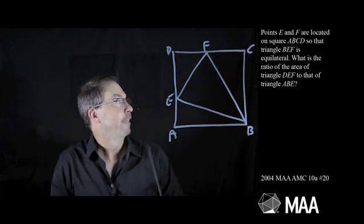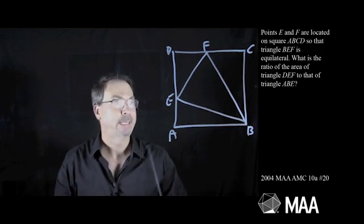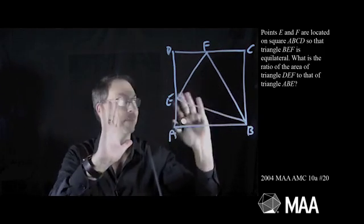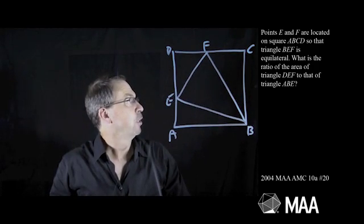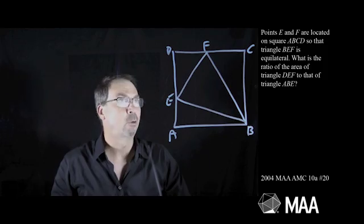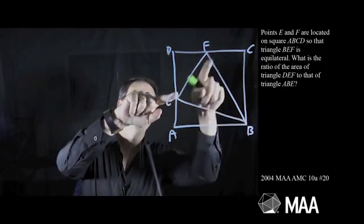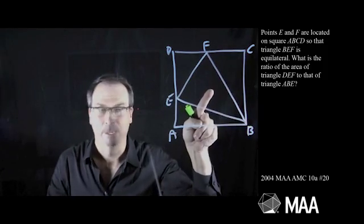Points E and F are located on square ABCD. This is a bad picture of the square, but there's the square with points E and F on ABCD. So that triangle BEF is equilateral. BEF. So this middle one is equilateral, unlike my picture.